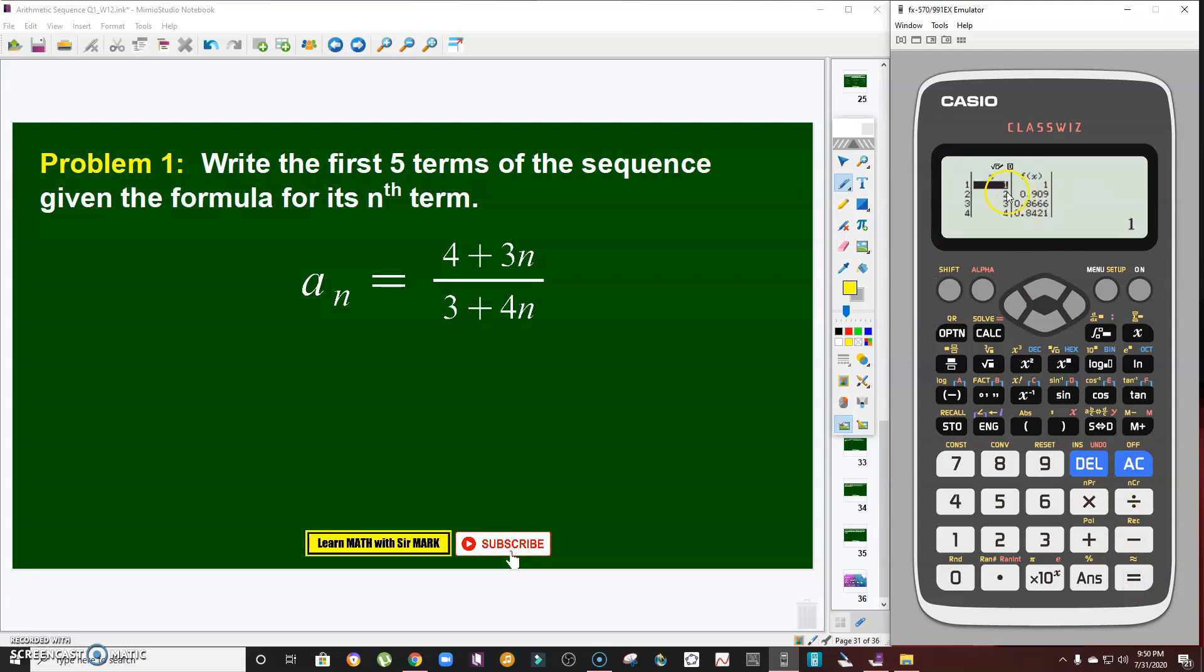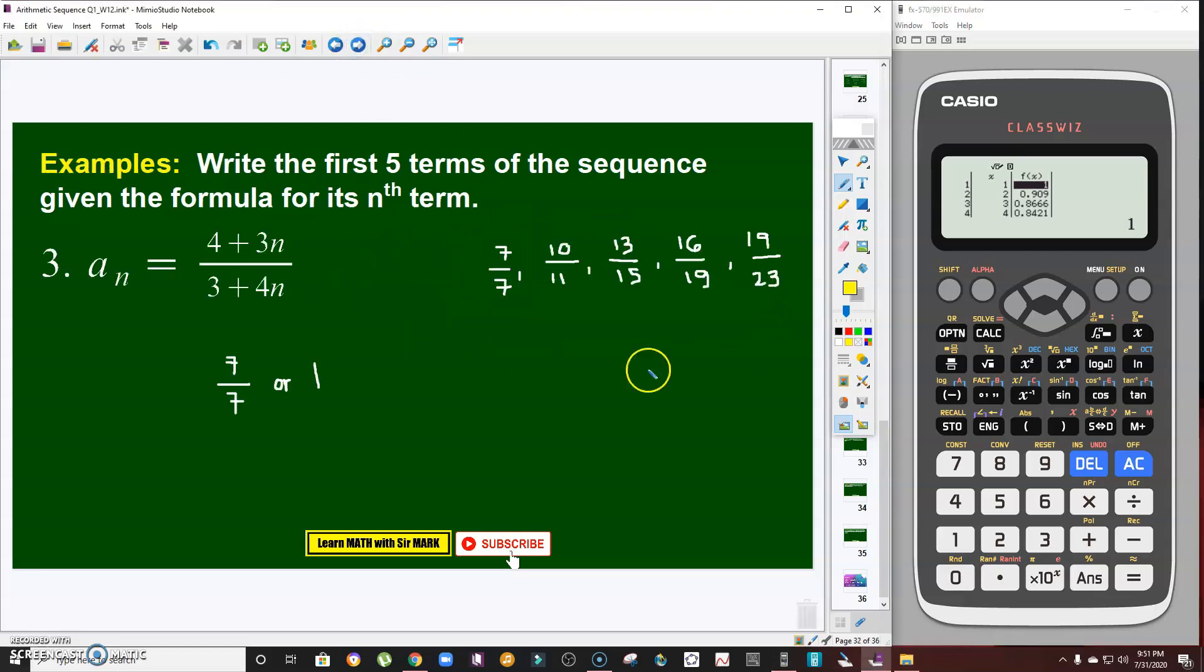Then enter. There you go. If n or x equals 1, y is 1, or f(x) or a_n is 1. If n or x equals 2, then a_n is 0.909, or the fraction 10/11. Then if x is 3, f(x) is 13/15. If x is 4, 16/19. If x is 5, 19/23. Those are the first five terms of the sequence. What was my answer earlier in the previous video? This is the answer from my manual solution. See that? They're the same: 7/7 is 1, 10/11, 13/15, 16/19, and 19/23.